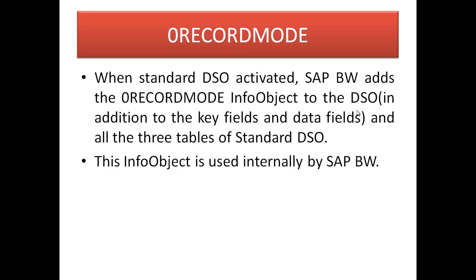There is also a zero record mode info object. When a Standard DSO is activated, SAP BW automatically adds the zero record mode info object to the DSO, in addition to the key fields and data fields. This info object is added to all three tables of the Standard DSO and is used internally by SAP BW — it is not created manually; the BW system creates it by default during activation.